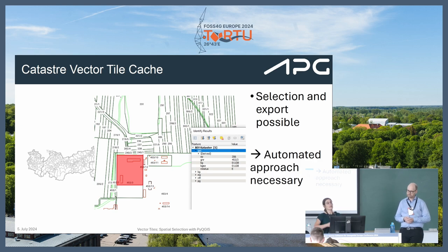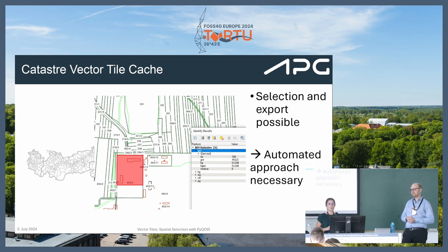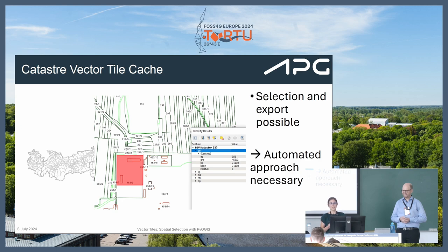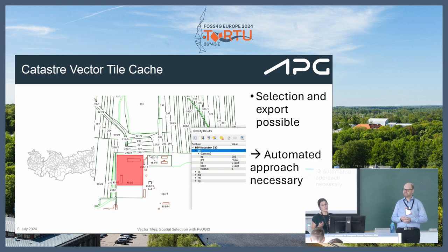It's possible in standard QGIS tools to select and export the data — select one parcel, export it, or select multiple. But what we need is an automated approach, as we are constructing power lines of some kilometers — like 10, 50, or 100 kilometers — and we need the information in a buffer of about 30 meters around this. It's a huge area, more than a single person can manually click through.